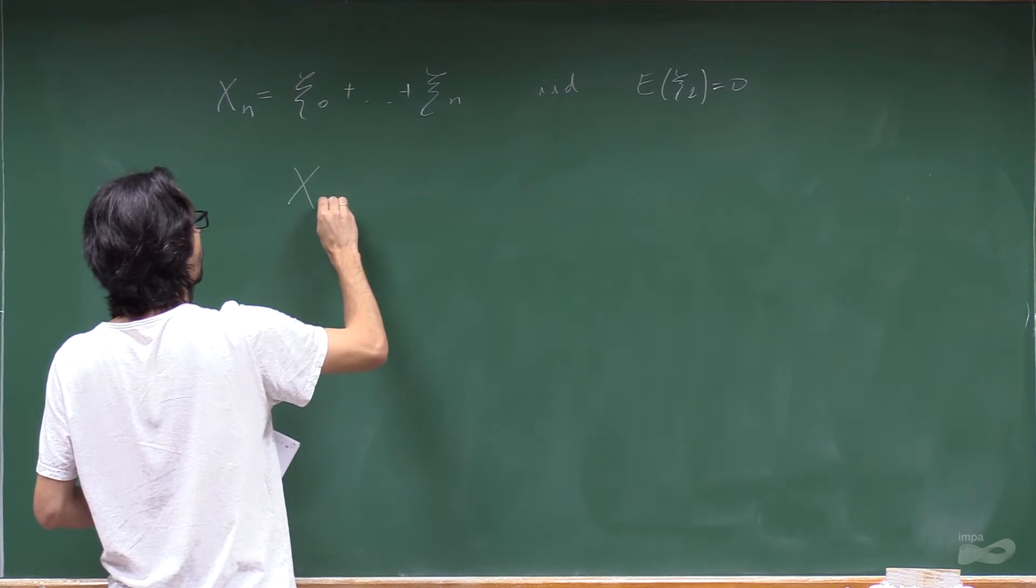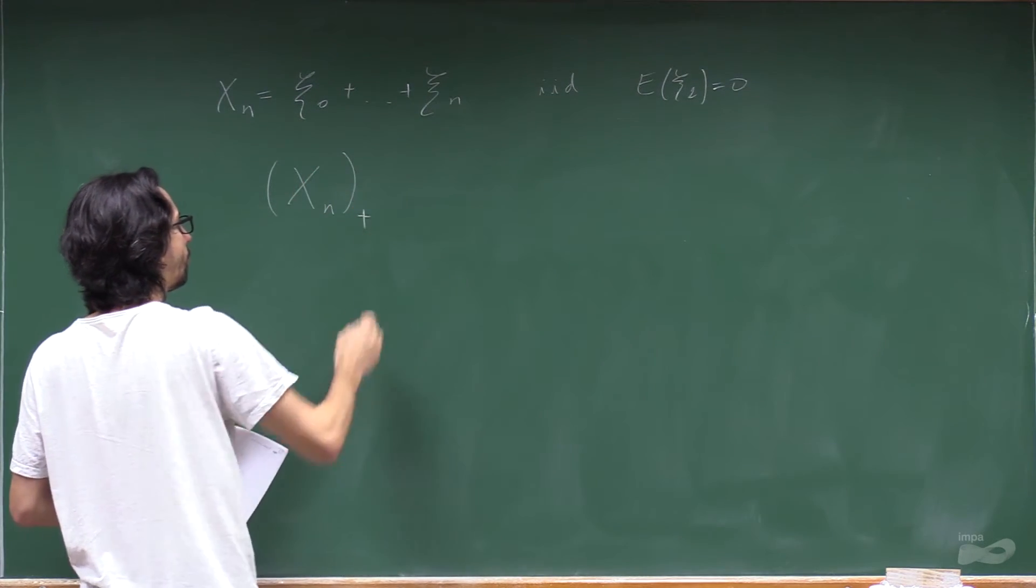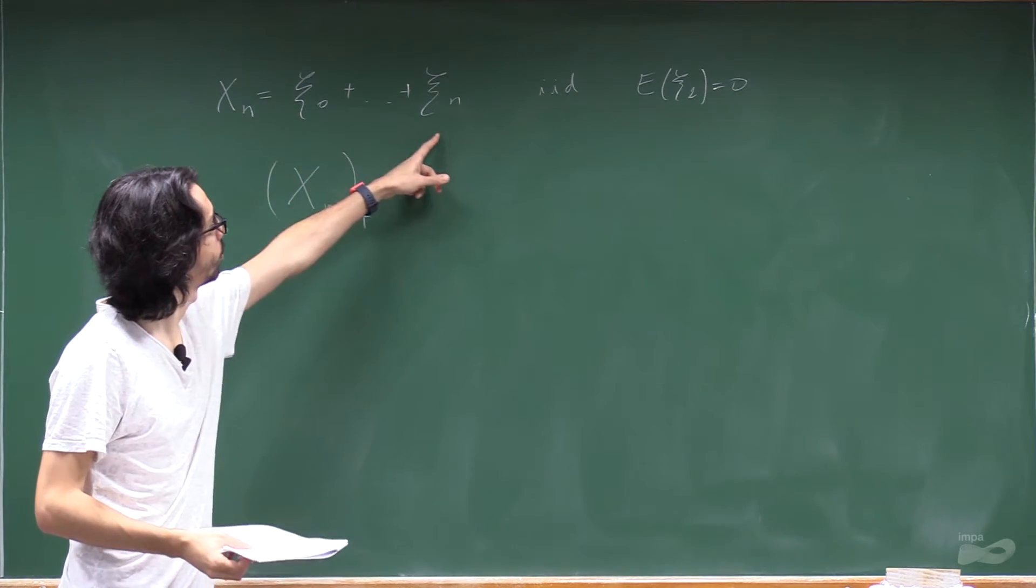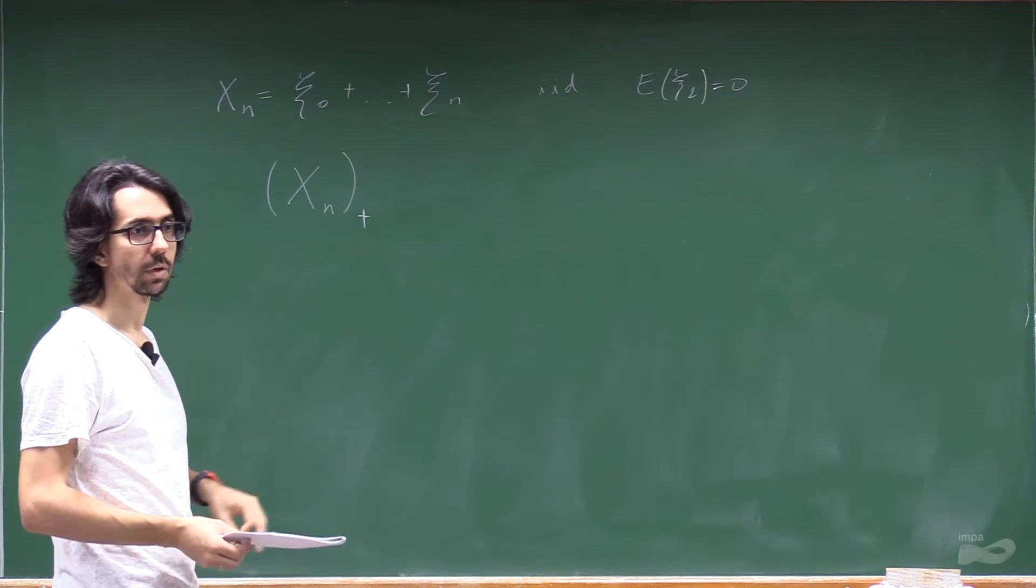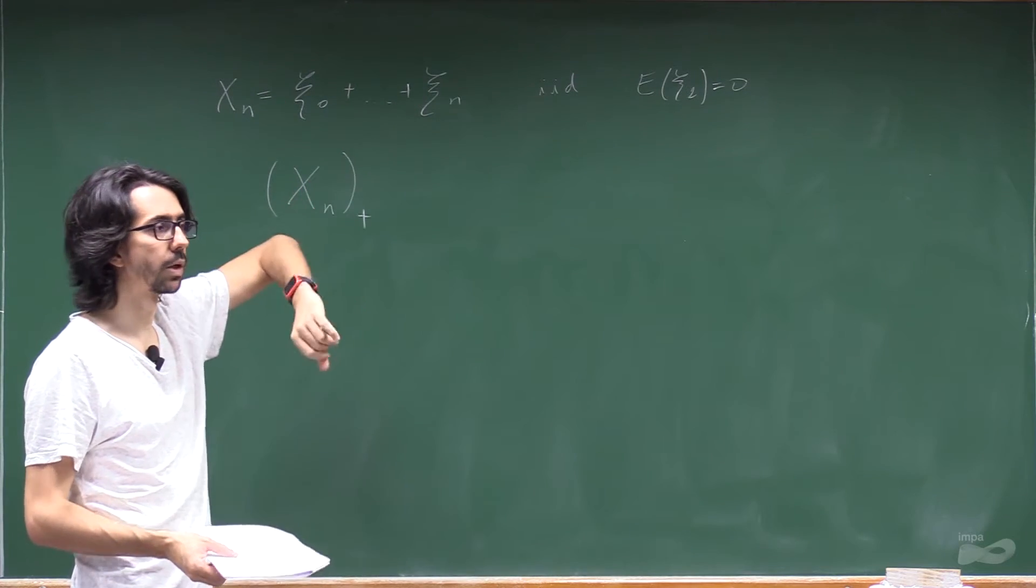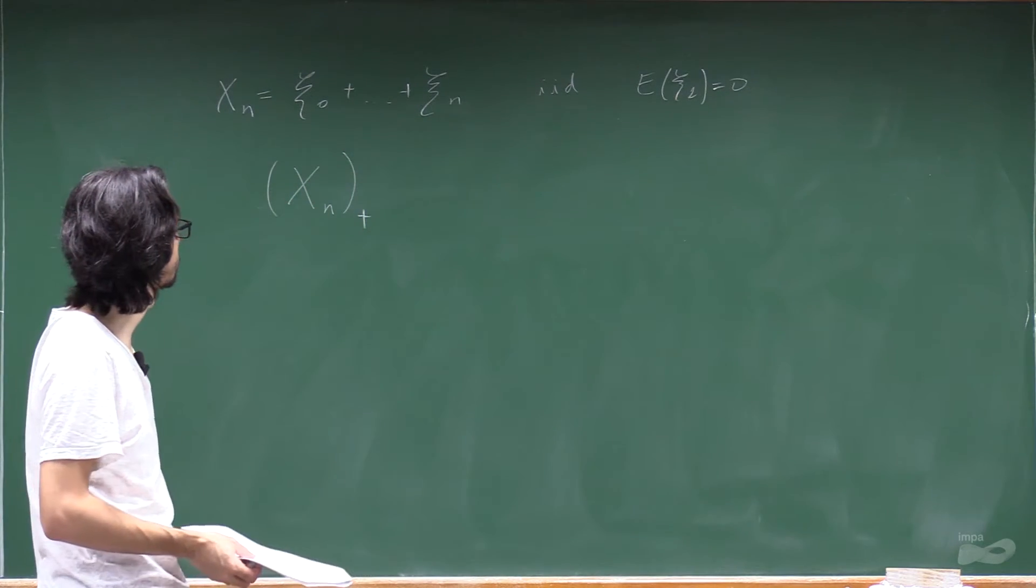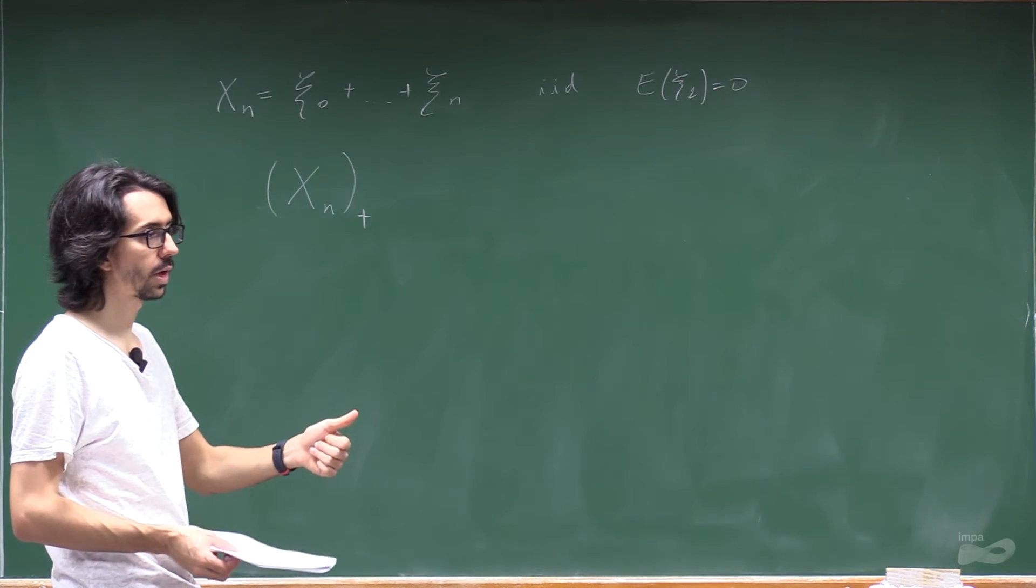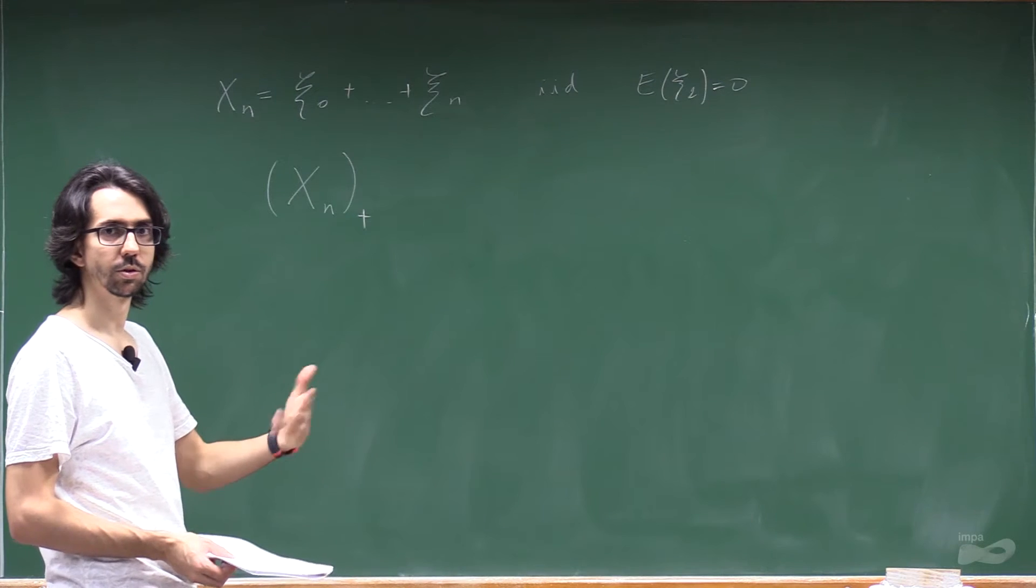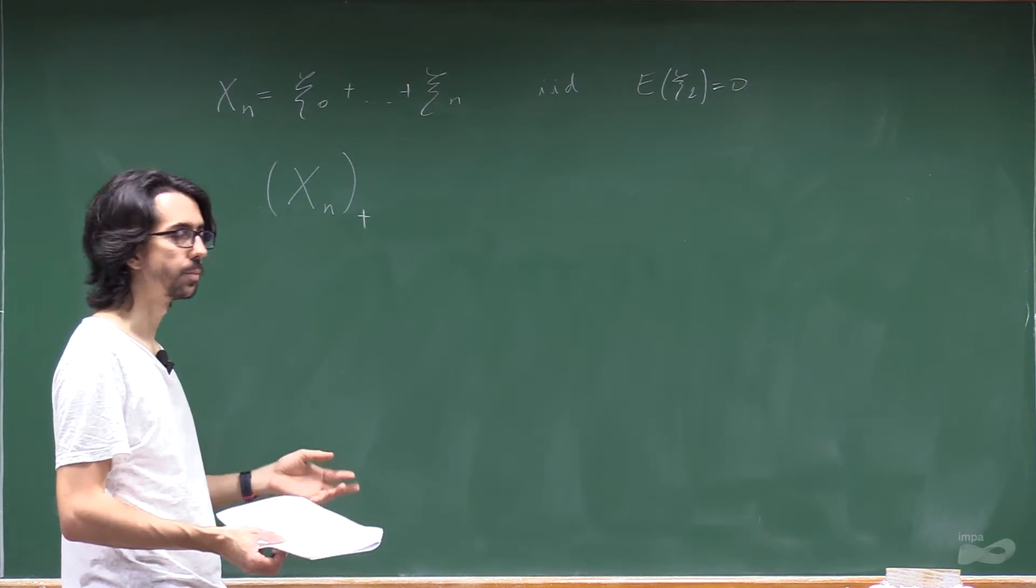Now, the positive part of xn, so for example, this was a fair game before, right? I draw, let's say these are coin tosses with probability minus 1 and 1 fair coins. So if I, every time, gain $1 or lose $1 depending on the result of the coin, this is a fair game. But if I can never go below zero, then it's a better game,